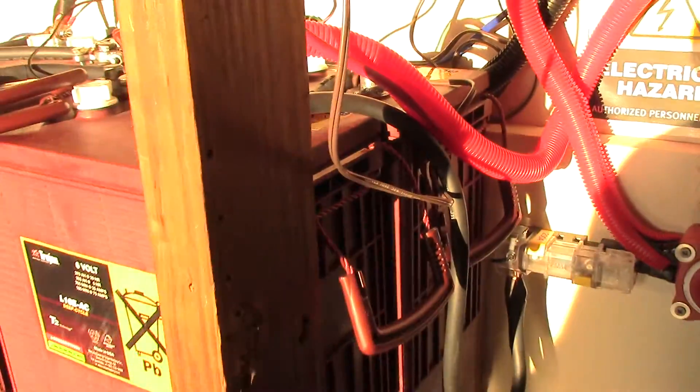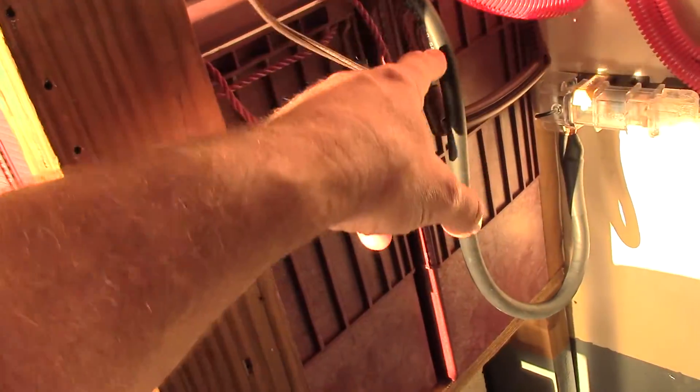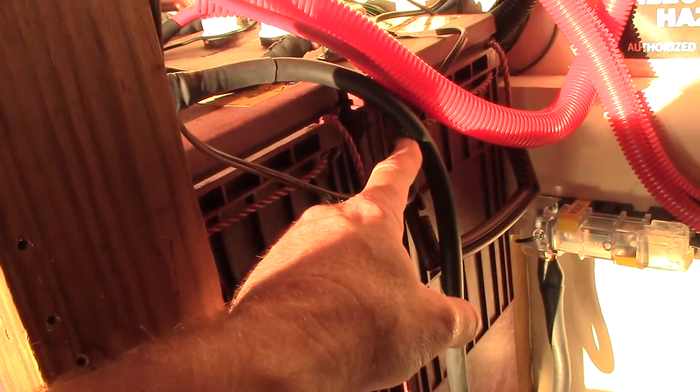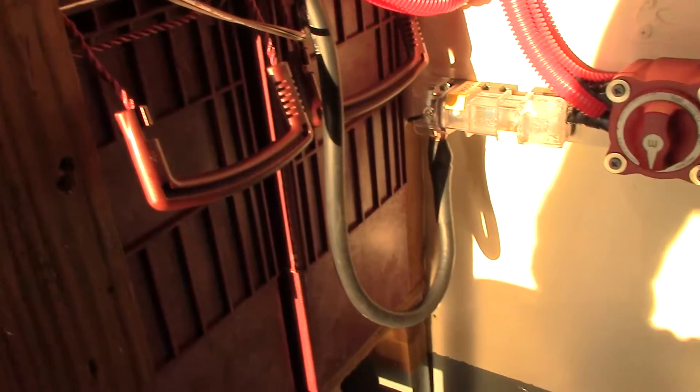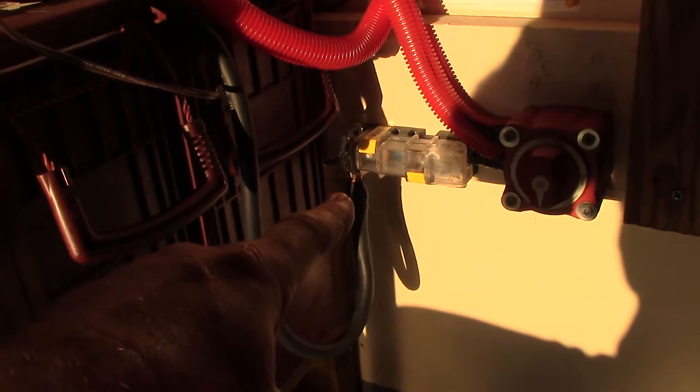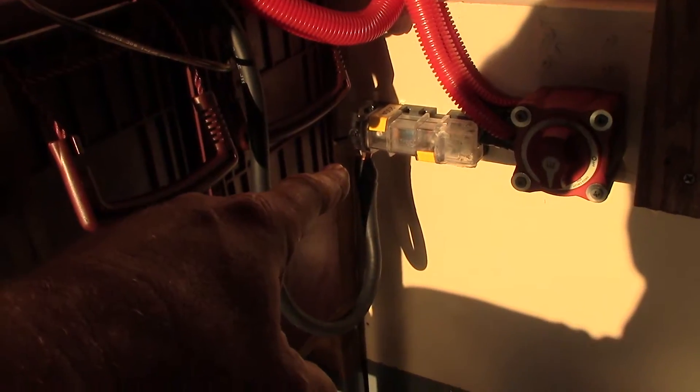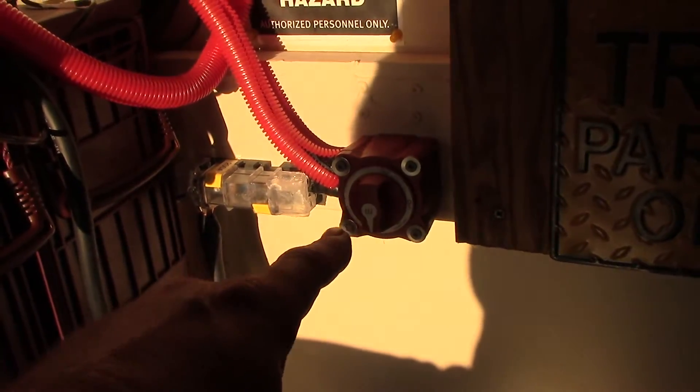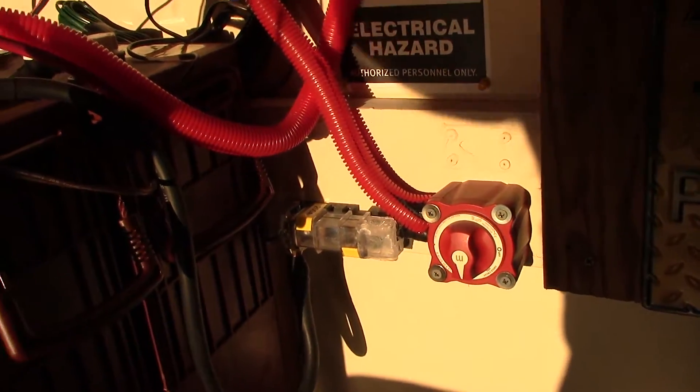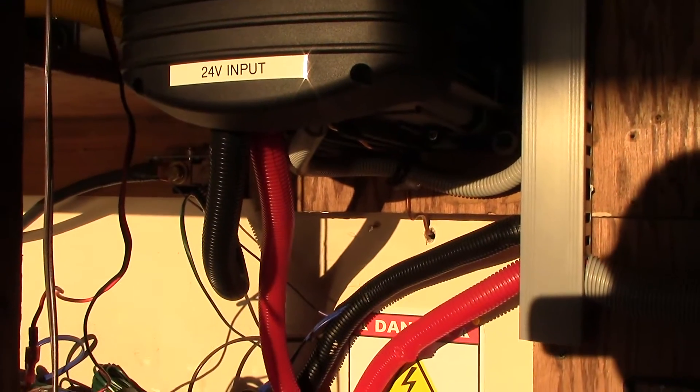And I replaced this big fat cable here with one-aught into the fuse, which is a 200 amp fuse switch, and then this is one-aught gauge going up into the inverter there.